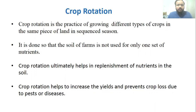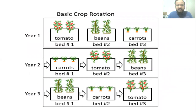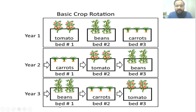Crop rotation ultimately helps in replenishment of nutrients in the soil. It also helps to increase yields and prevent crop loss due to pests and diseases. As you can see in this diagram, in bed one, tomato was grown in the first year, carrots in the second year, and beans in the third year — so different crops are grown on the same piece of land in different seasons.